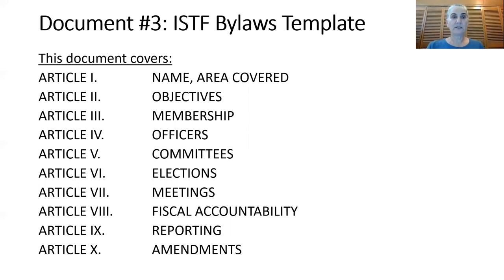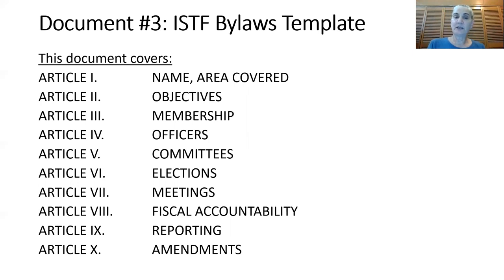Article seven is meetings for both the executive committee and the membership as a whole. Article eight is about financial accountability — how funds will be spent responsibly. Nine is about that necessary reporting. And ten is about how you will carry out amending your bylaws.